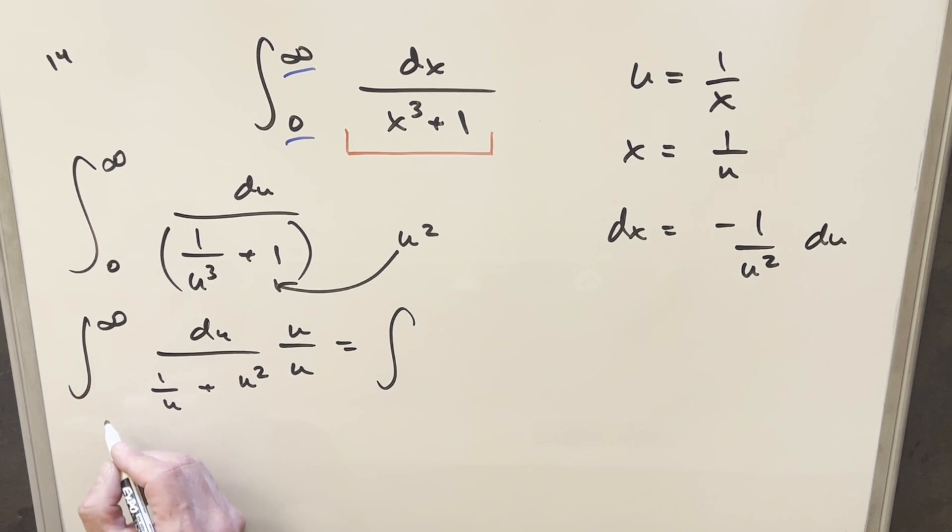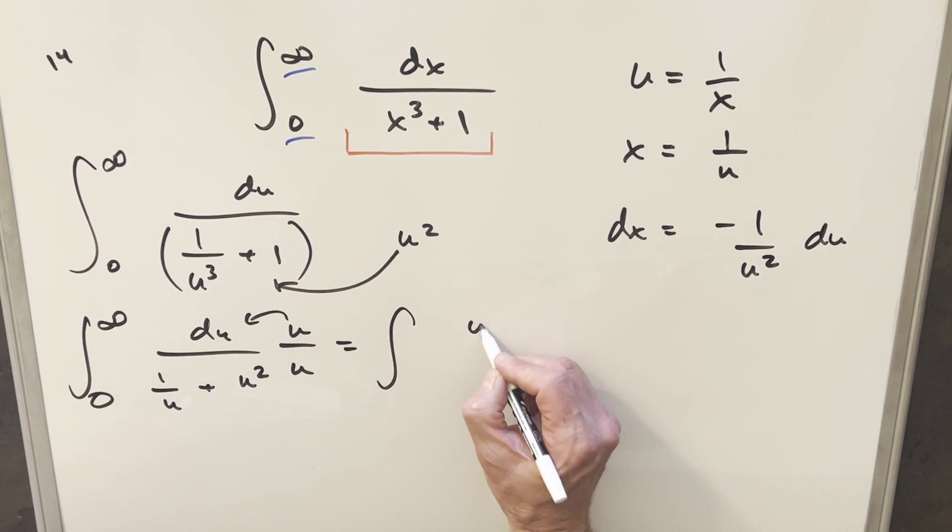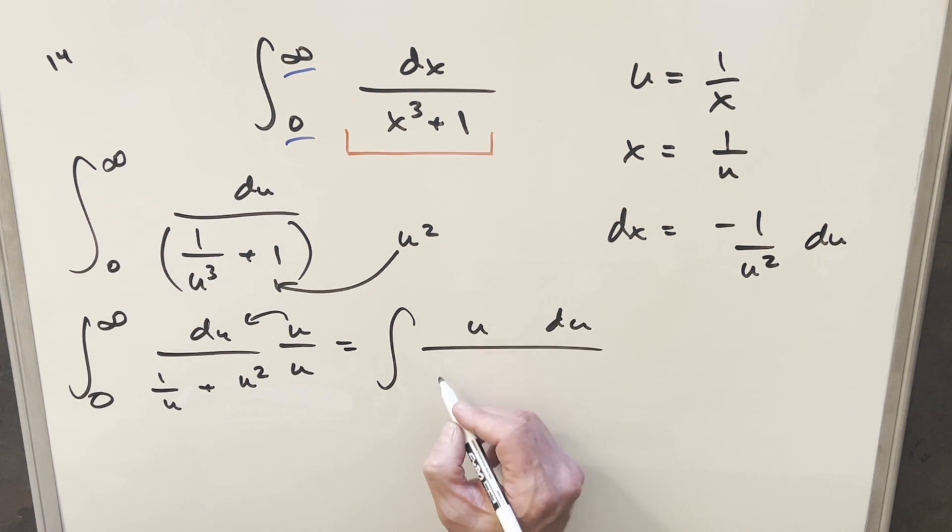We could have done it in one step, but let's just write it out. Anyway, we actually have no lower bound here, so that's a problem. So let's add a 0 there. Then multiply all this stuff, and this is going to become u du. And then we'll have here 1 plus u cubed.